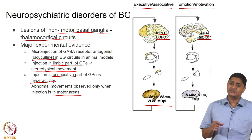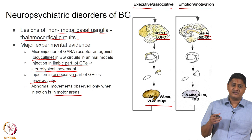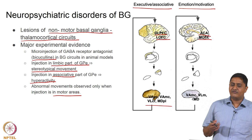If a particular part forms part of the limbic circuitry, that is going to result in a specific neurobehavioral disorder. If it forms part of the executive or associative network, that is going to cause a specific behavioral disorder, and these two are not expected to be the same. If it forms part of the motor circuitry then it is going to cause some motor disorder.